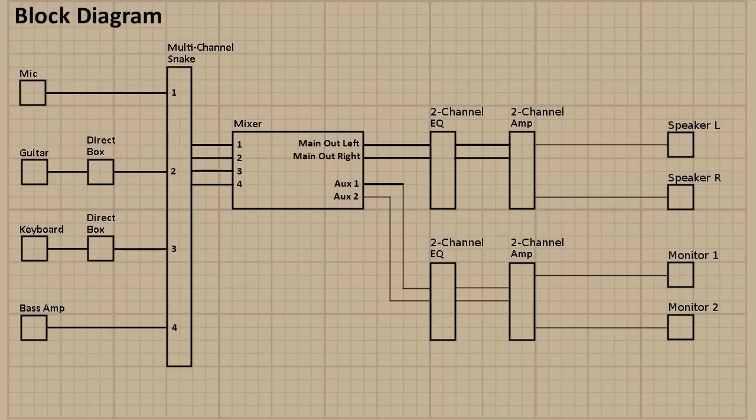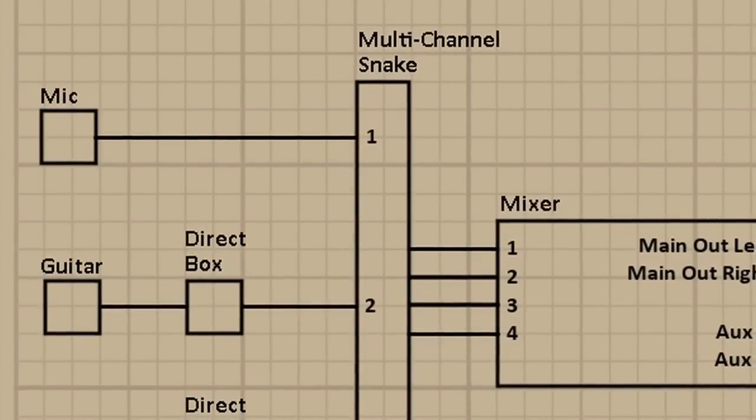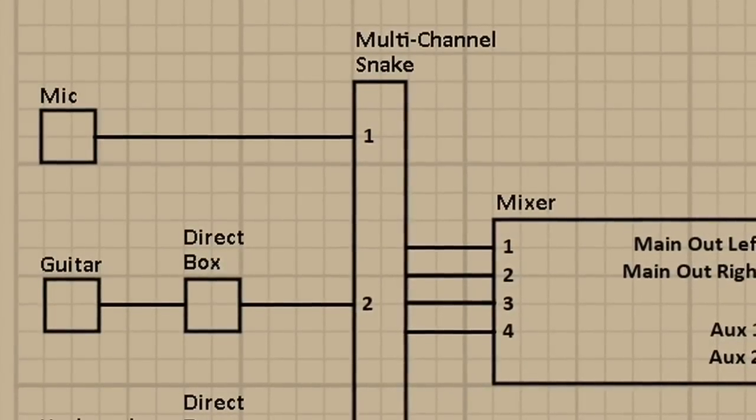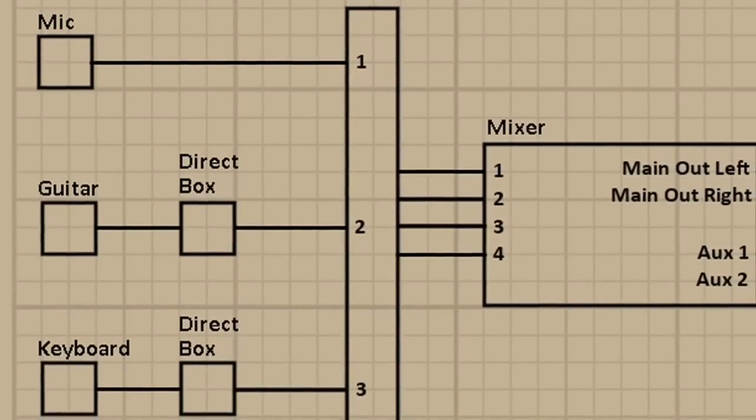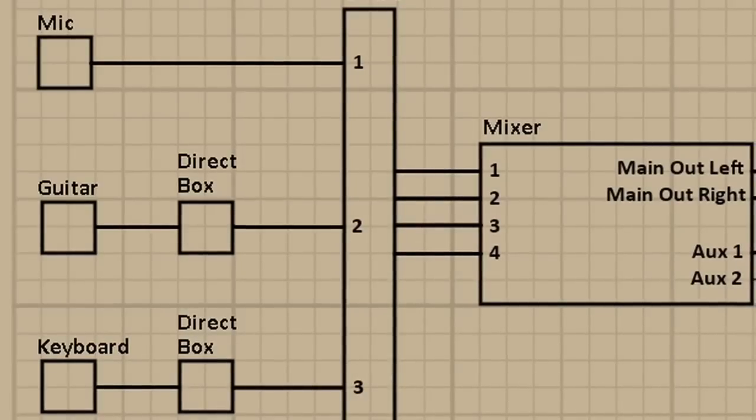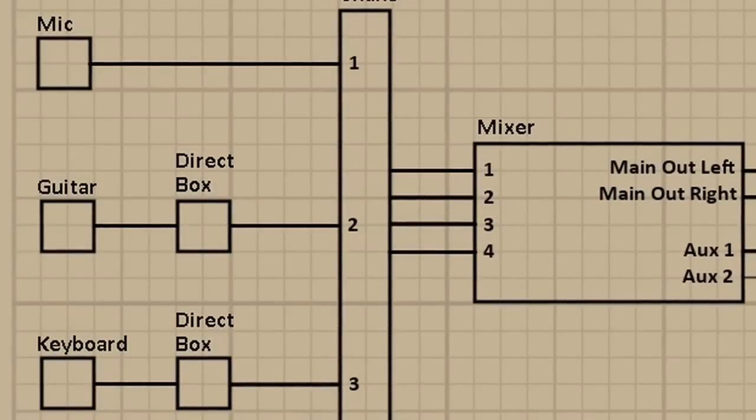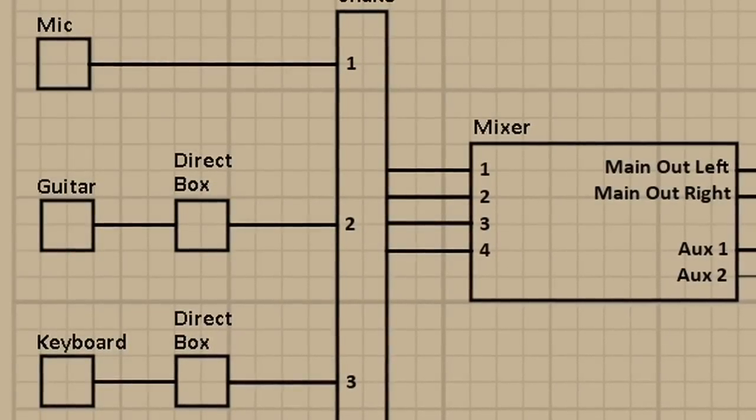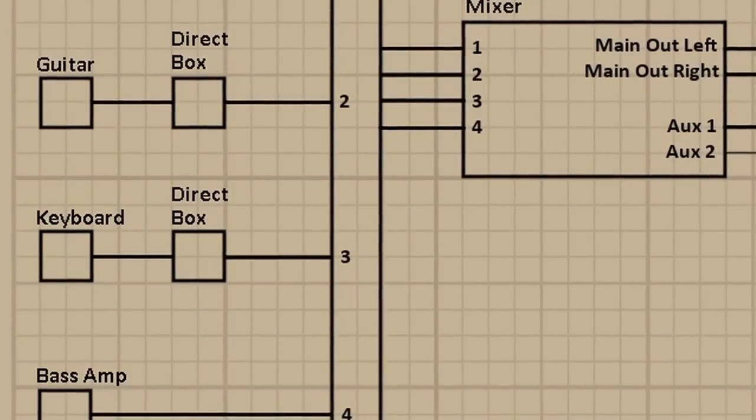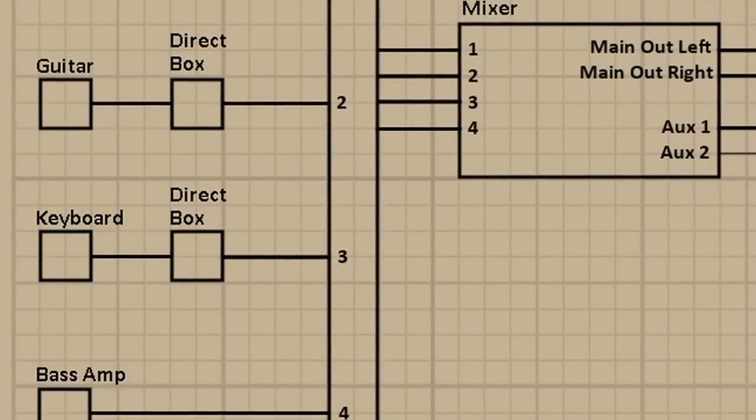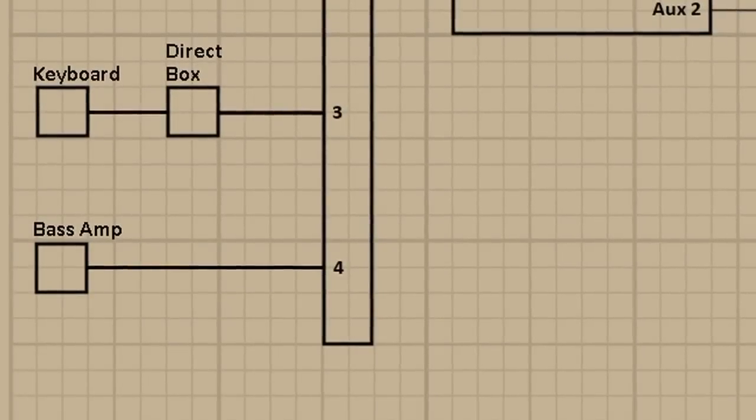This is a very generic setup, but a lot of people use something very similar to this. So let's take a look at it. We've got a microphone, and that's plugged into a multi-channel snake input number one. And we've got a guitar plugged into a direct box, and that direct box is plugged into multi-channel snake input two. We've got a keyboard also going to a direct box, going to snake channel three, and a bass amp going to snake channel four. And that's down on the stage.